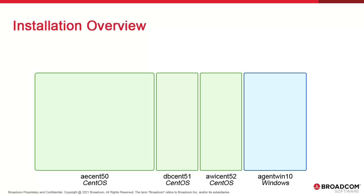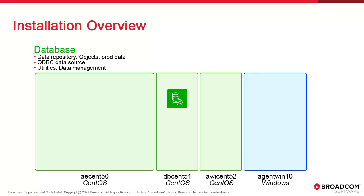We start with four baseline systems. Three are CentOS 7 Linux systems, and one is Windows. One of the Linux systems is assigned to the database. This is standard practice for most of our customers. The database stores data artifacts for objects, production data, and history. Supported packages include Oracle, DB2, PostgreSQL, as well as SQL Server for Windows. In the case of SQL Server, we also need a native Windows ODBC connection for access. In this course, we use PostgreSQL since it's open source and supported on Linux.